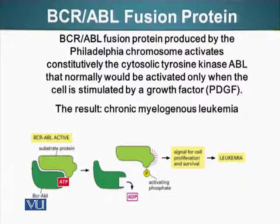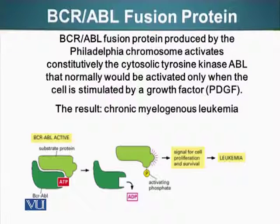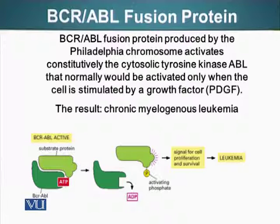Signals such as PDGF can cause cells to divide. When this BCR-ABL fusion protein is constitutively active, these cells start to divide, and this results in chronic myelogenous leukemia — a type of blood cancer.